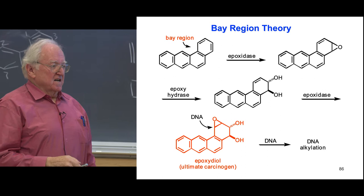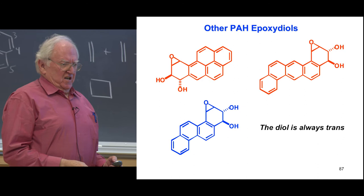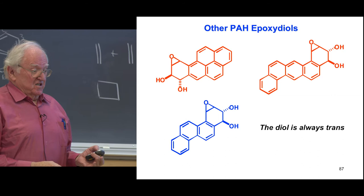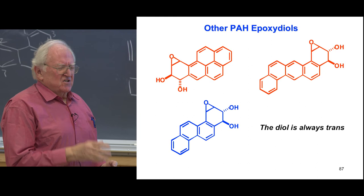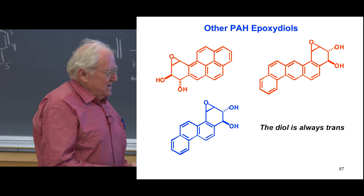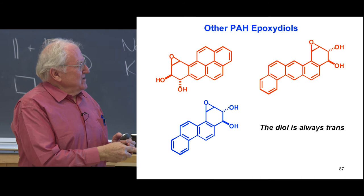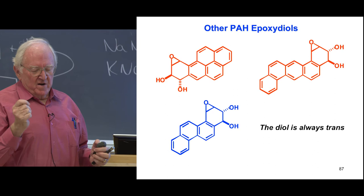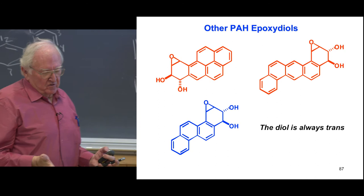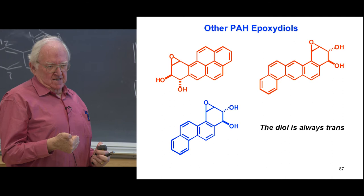Even compounds that don't cause cancer, like chrysene, also form an epoxidiol, but it doesn't have the right shape to intercalate DNA. Two things have to happen: it has to be converted to the epoxidiol and have the basic bay region shape to get into the DNA and position itself for reacting with guanosine. Your DNA is the largest nucleophile in the world, and the most nucleophilic part is guanosine. Here's the evidence: the guanosine piece of DNA gets stuck to the epoxidiol. The NH2 attacks the epoxide — trans product, nitrogen up, alcohol down — at the benzylic carbon, which is always the site of nucleophilic attack.